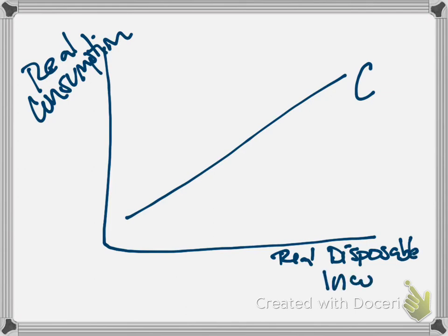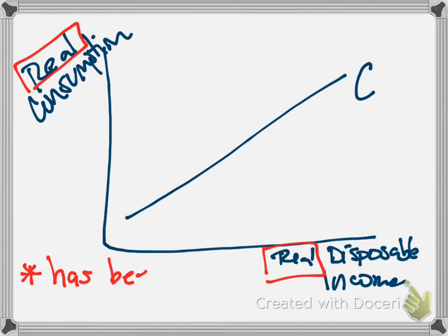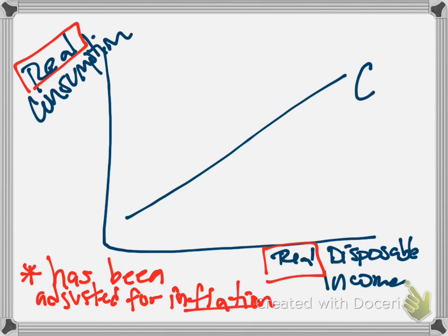Now recall from earlier lectures that when we use the qualifying word real, which we're using here for both of our variables, that means it has been adjusted for price changes, or we can call price changes just inflation. So we've taken the price change out.